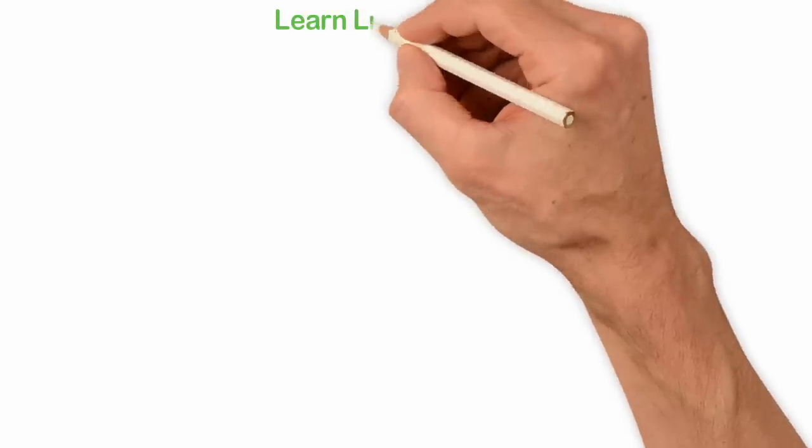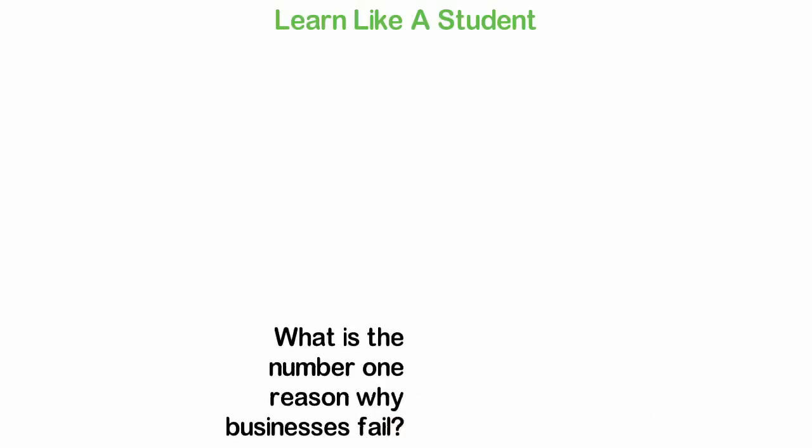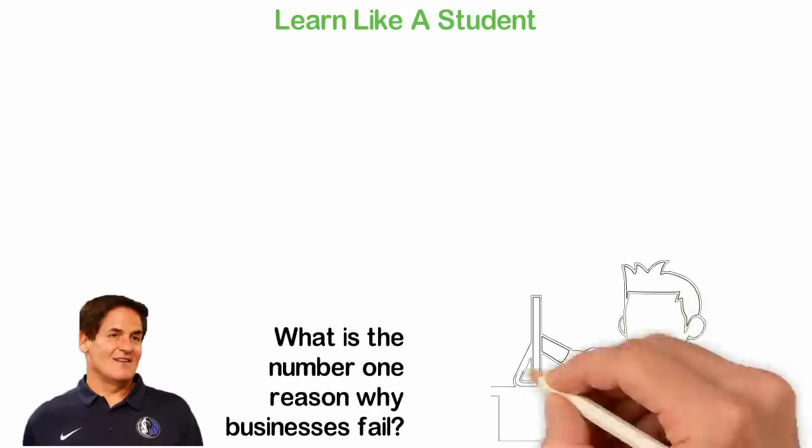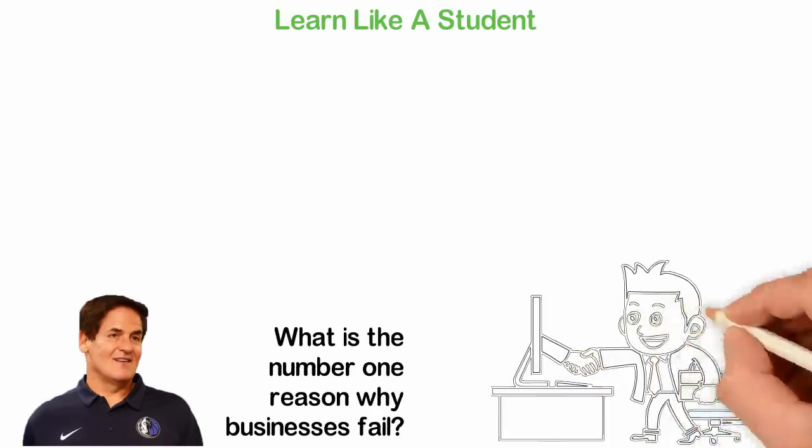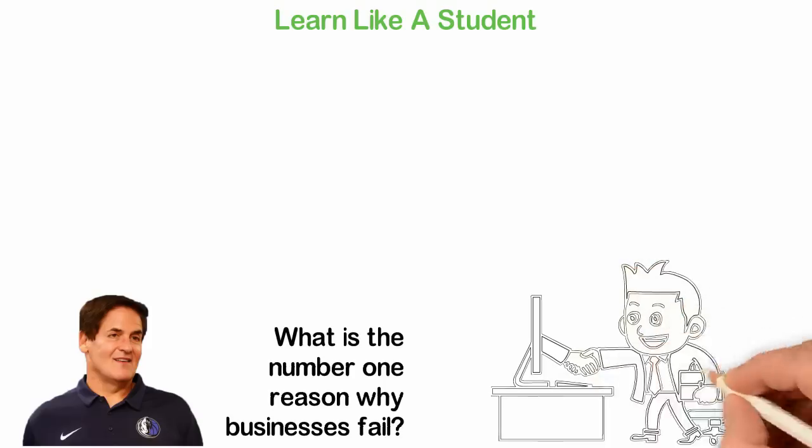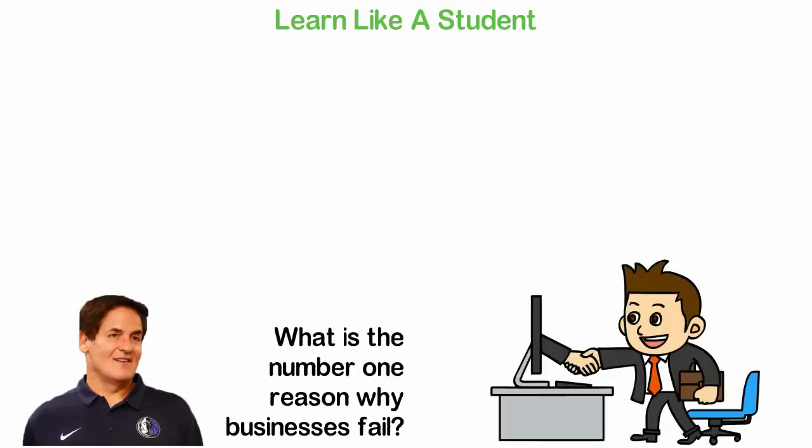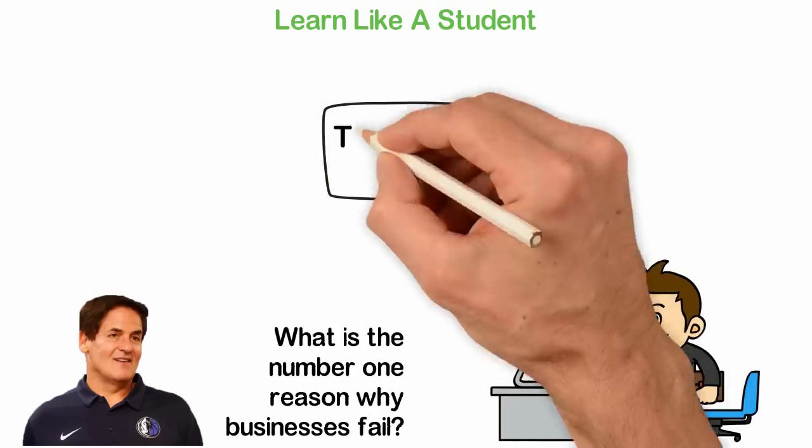Learn like a student. Mark Cuban was asked some time ago, what is the number one reason why businesses fail? His answer was simple because the owner doesn't learn. The formula I developed for getting rich is simple. Know what nobody knows and you'll be able to do what nobody can do and when you do what nobody can do or you create what nobody can create, everyone will give you the money to have what you've created or get you to use your big brain to help them. I don't know any successful person who doesn't know what most people don't know.